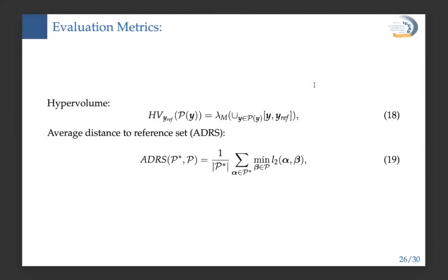The evaluation metrics are as follows. The first is hypervolume, which measures the improvement of the new Pareto frontier relative to a reference point compared with the previous one. The second is the Average Distance to Reference Set, ADRS, which evaluates the closeness of a learned Pareto optimal set P to a ground truth Pareto optimal set P'. We want hypervolume to be as large as possible and ADRS to be as small as possible.